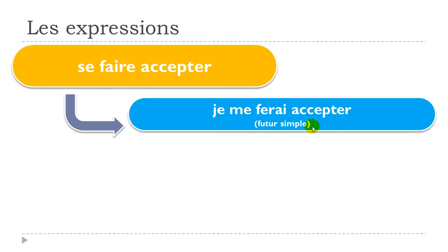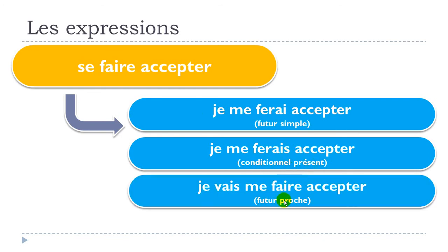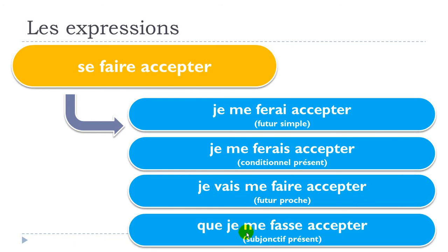Let's conjugate this expression at different tenses. Le futur simple: 'je me ferai accepter'. Le conditionnel présent: 'je me ferais accepter' — phonetically the same but note the extra 's' in writing. Le futur proche: 'je vais me faire accepter'. Le subjonctif présent: 'que je me fasse accepter'.